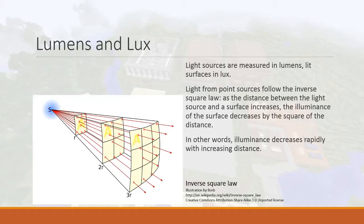What does that mean? If you have four lumens at one meter, then you get one lumen at two meters — it's a square relationship. Two squared is four. The reason is that if you imagine a point source of light like a candle, the light radiates outward in a sphere, and as you get further away from the candle, the sphere increases.